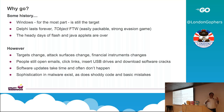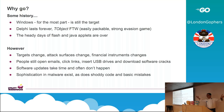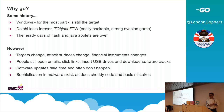What's effectively happened is that targets have changed, attack surfaces have changed, and financial instruments have changed — the way you can actually squeeze money out of it. What hasn't changed is that people still click on links, still insert USB drives, and still download software cracks — a very popular way of distributing malware. It's unbelievable how many things come bundled with some version of an Adobe Photoshop crack. People don't patch, and sophistication in malware exists — but so does shoddy code and basic mistakes. My suspicion is when malware authors discover TDD, we're all doomed.